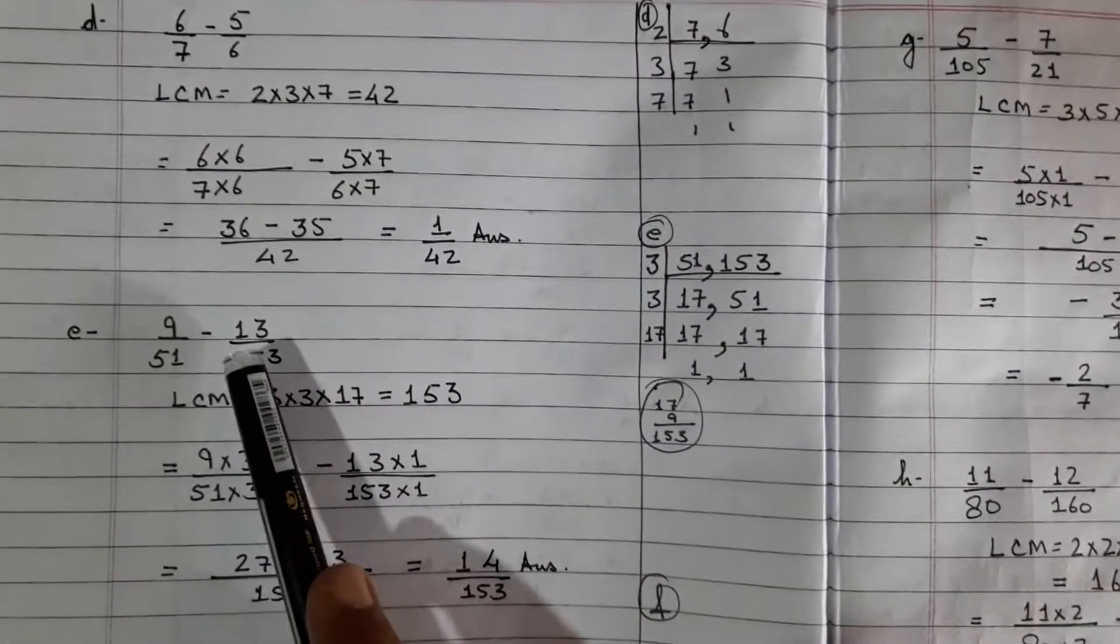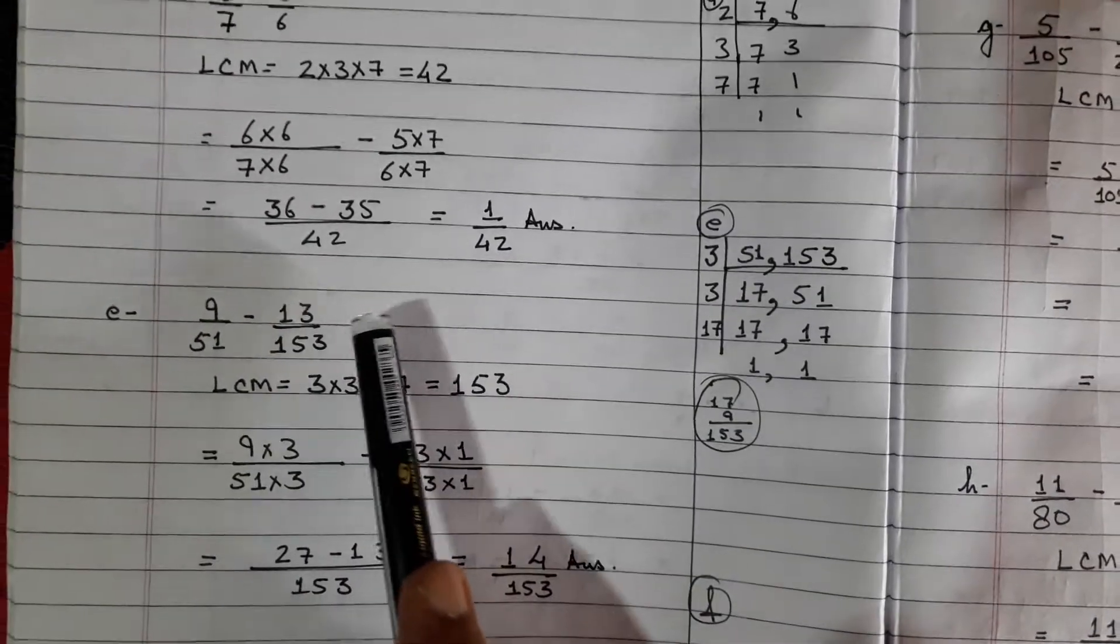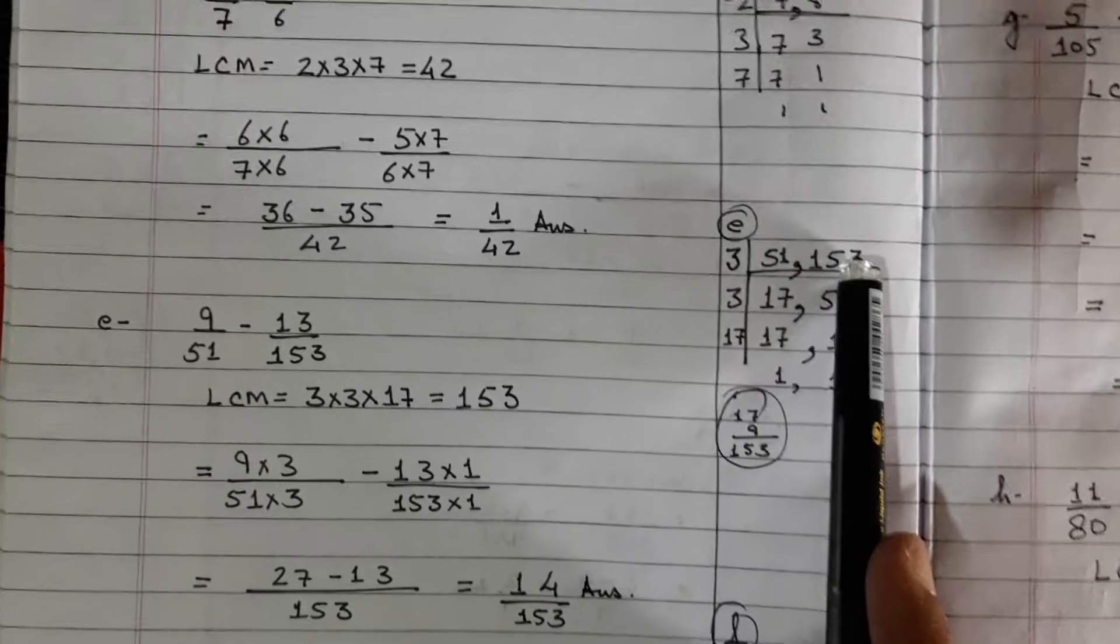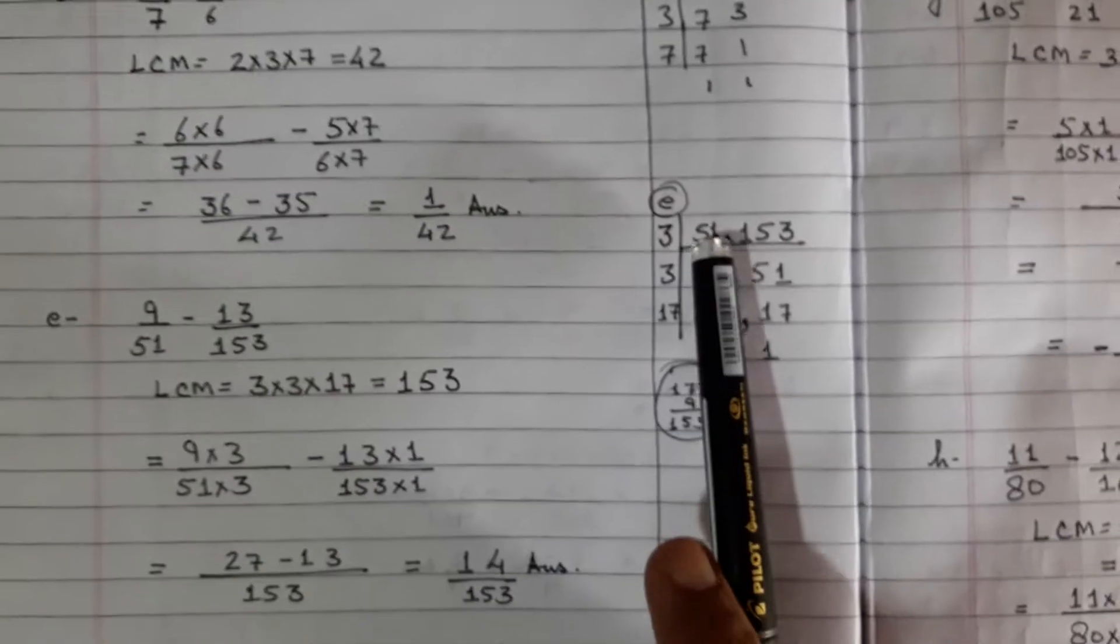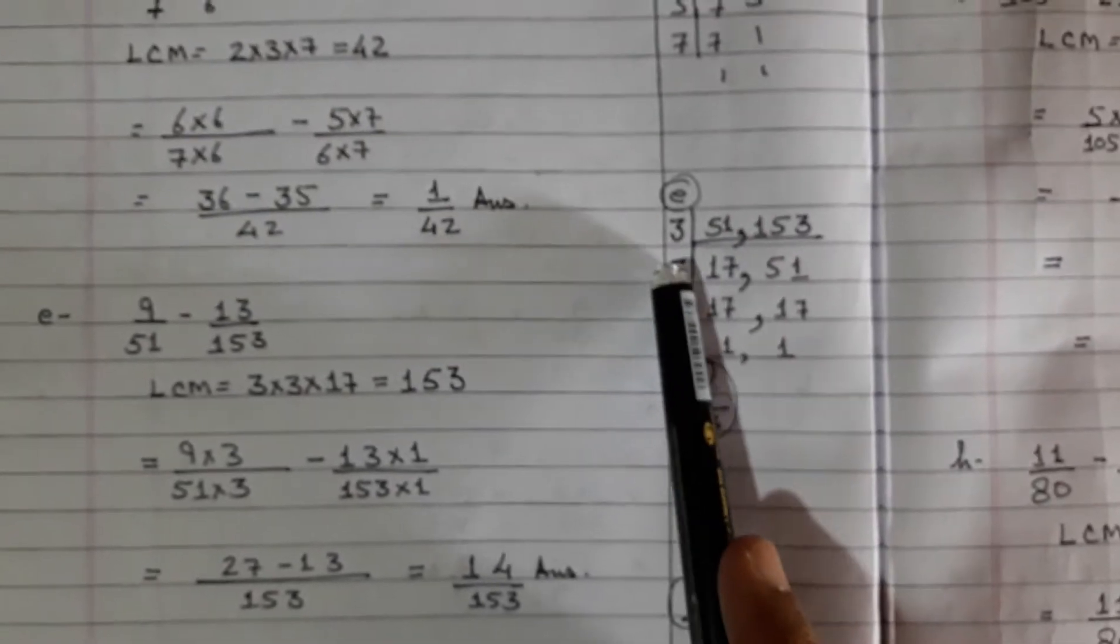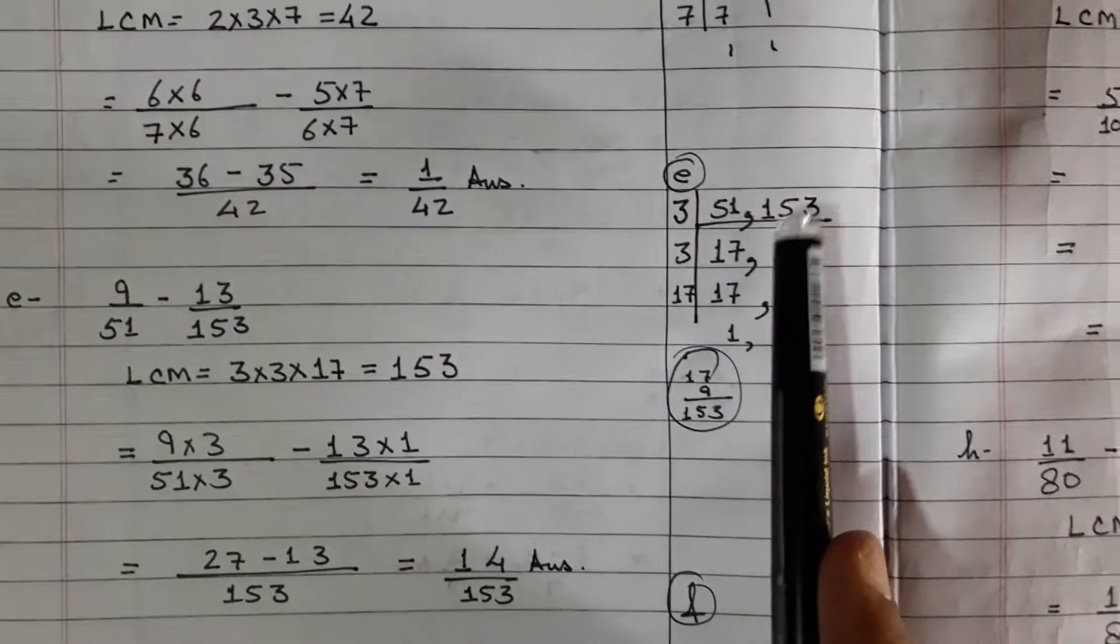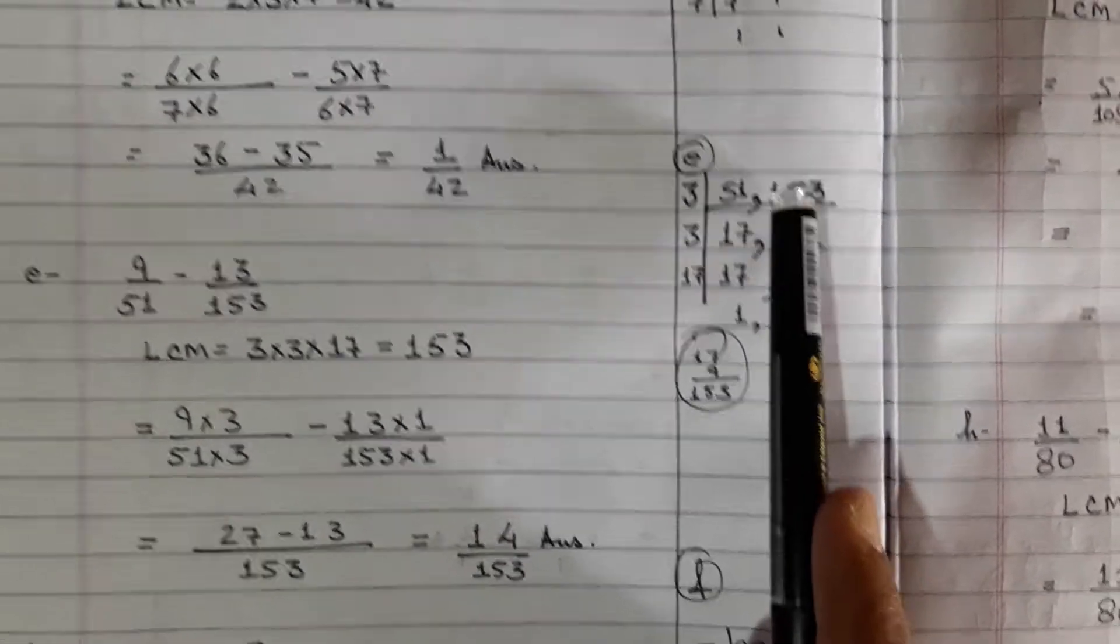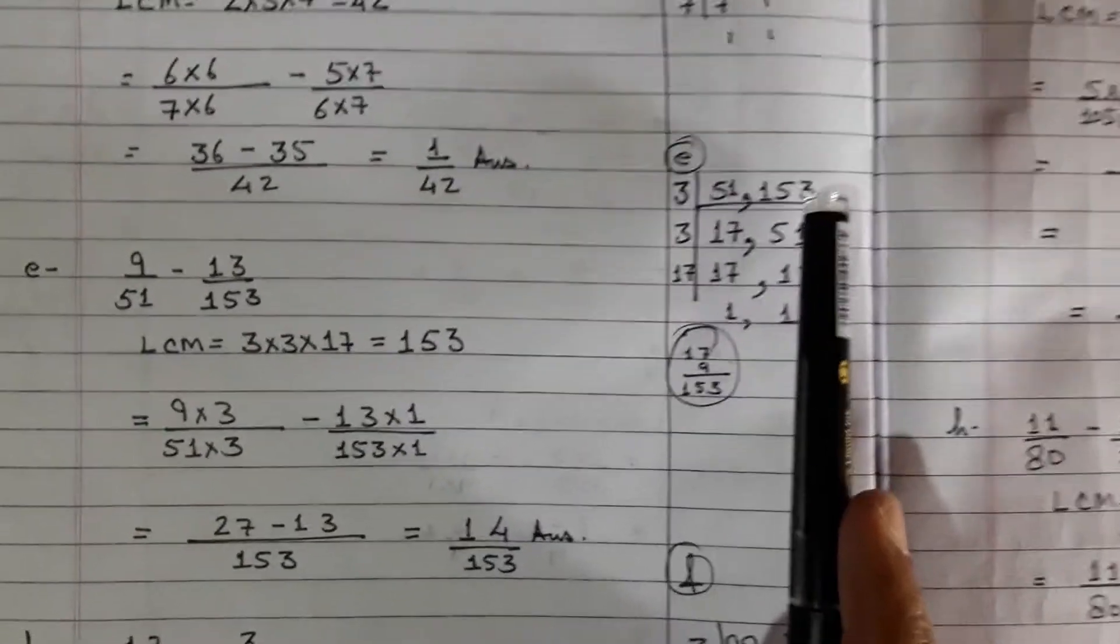9 over 51 minus 13 over 153. Yes, this is worth pondering. 51 and 153 are two big numbers. If you remember the divisibility test of various numbers, it will be helpful. 51, can it be divided by 3? 5 plus 1, 6. Yes. And 153 can also be divided by 3. 5 plus 1 is 6, 6 plus 3 is 9. So it passes the divisibility test of 3.